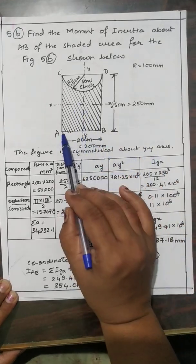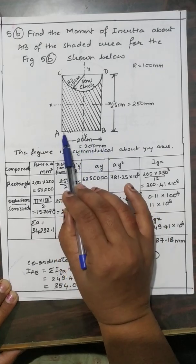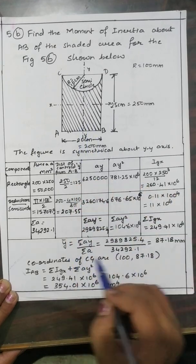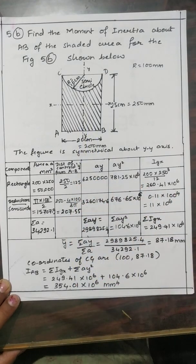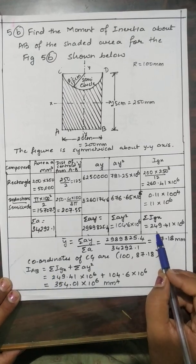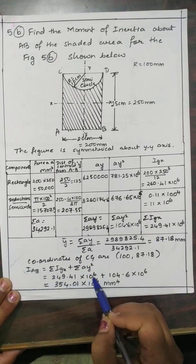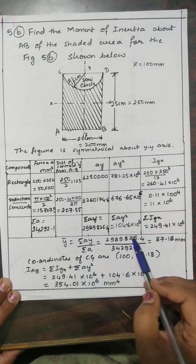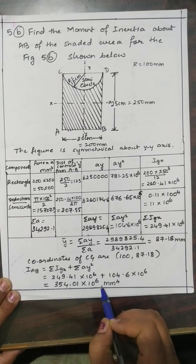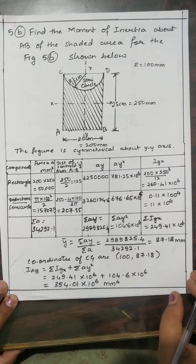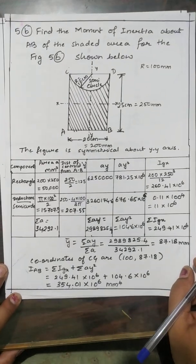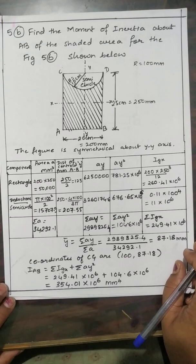The coordinates of the centroid of the shaded portion are (100, 87.18) mm. X-bar is 100 because the figure is symmetrical about the Y-axis, so it's half of the total breadth of 200 mm. Now, the moment of inertia about AB: I_AB = ΣIGx + ΣAY² = 249.41 × 10⁶ + 104.6 × 10⁶ = 354.01 × 10⁶ mm⁴. This is the moment of inertia about AB of the shaded portion.